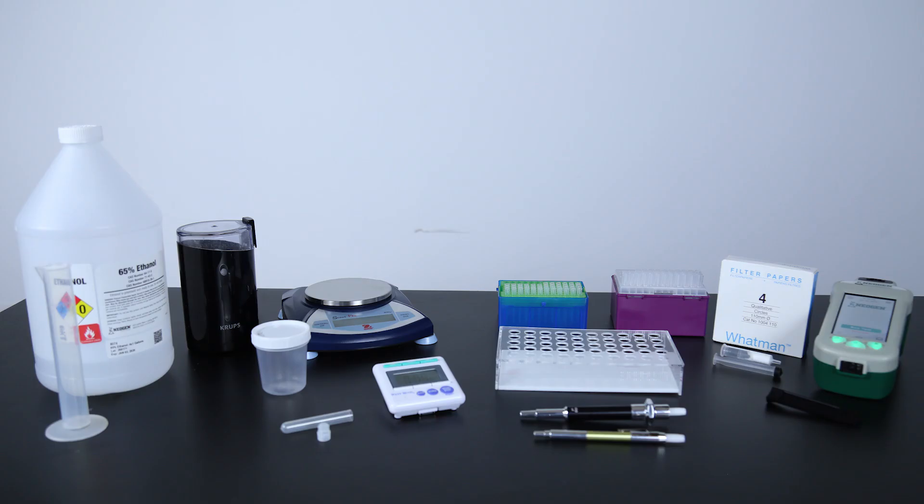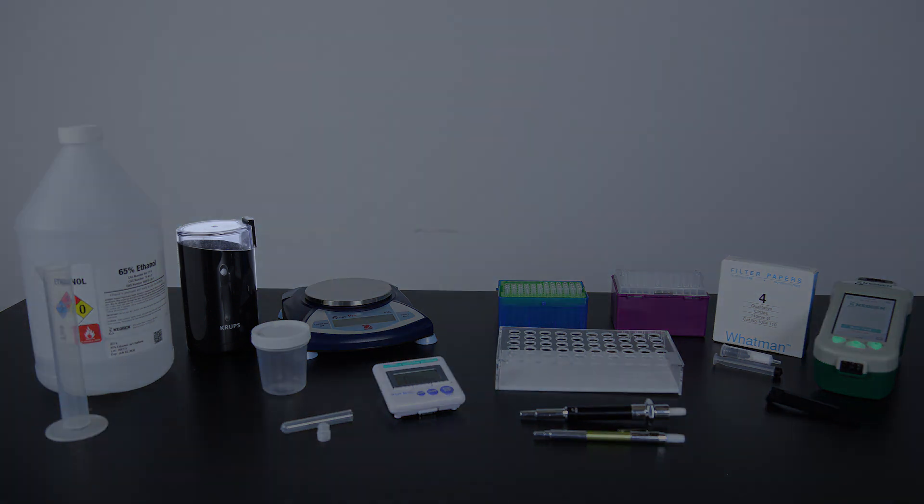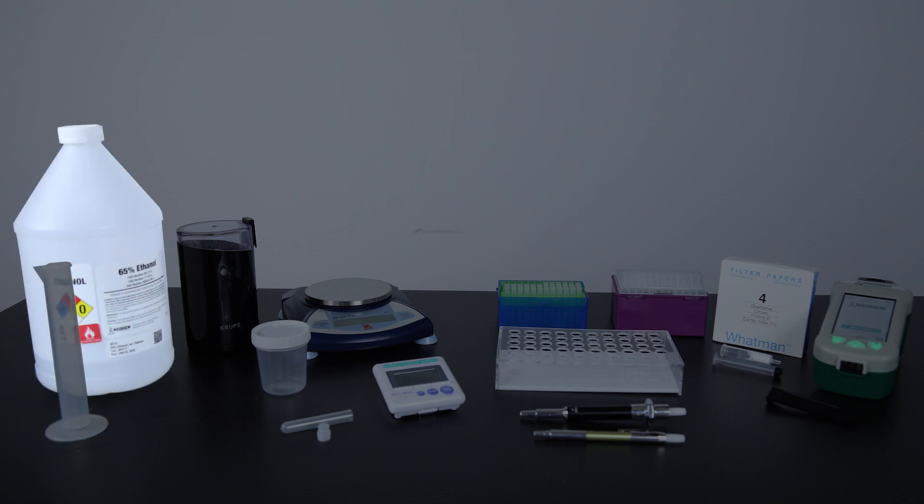To conduct the test, you will also need an Agri-Grind or equivalent grinder, a scale capable of weighing 10 grams accurate plus or minus 0.1 gram, a timer, a Reveal sample cup rack, and a 50 milliliter graduated cylinder.